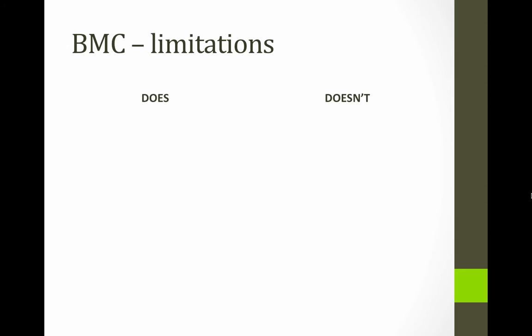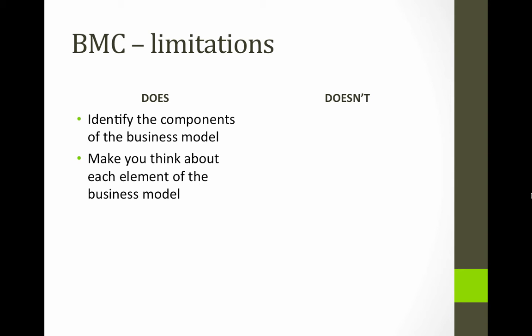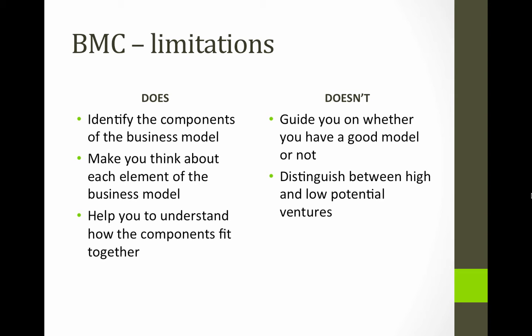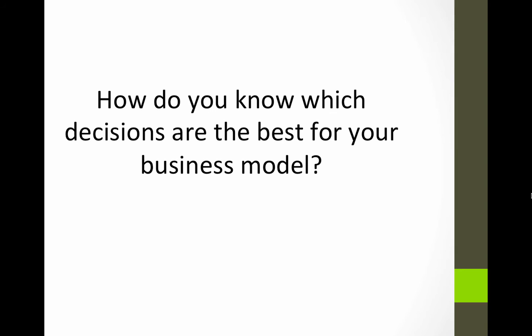The business model canvas has some advantages and it also has some limitations. It identifies the components of the business model, makes you think about each element, and helps you understand how all the components fit together. What it doesn't do is guide you on whether it's a good model or not. It doesn't help you to distinguish between high and low potential ventures. If a couple of different models are workable, how do you know which one's better? How do you know which decisions are the best for your business model?